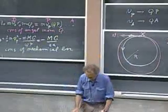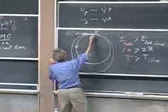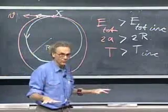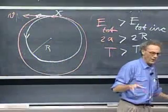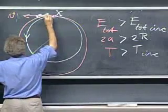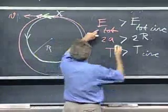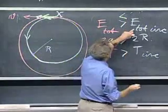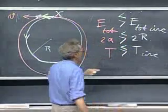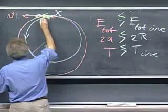The other option is to fire the rocket backward, spewing gas forward, removing kinetic energy. My speed decreases, total energy becomes less than the circular energy, 2a becomes less than 2r, the orbital period decreases below the circular period, and I get a smaller inner ellipse.